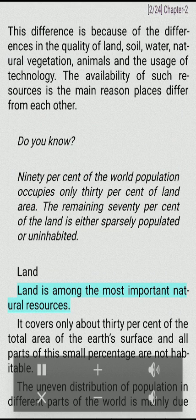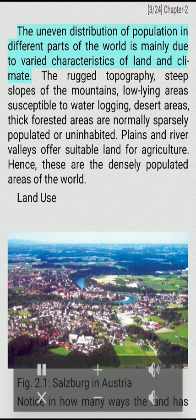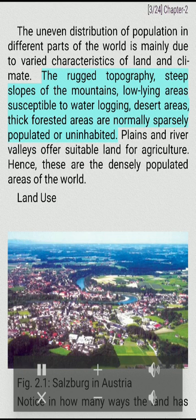Land is among the most important natural resources. It covers only about 30% of the total area of the Earth's surface and all parts of this small percentage are not habitable. The uneven distribution of population in different parts of the world is mainly due to varied characteristics of land and climate. The rugged topography, steep slopes of the mountains, low-lying areas susceptible to waterlogging, desert areas, and thick forested areas are normally sparsely populated or uninhabited. Plains and river valleys offer suitable land for agriculture; hence, these are the densely populated areas of the world.